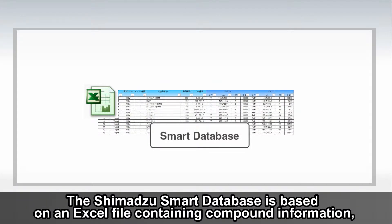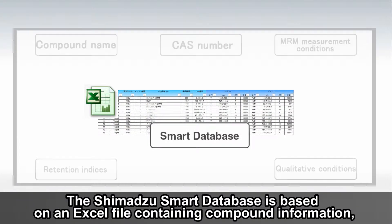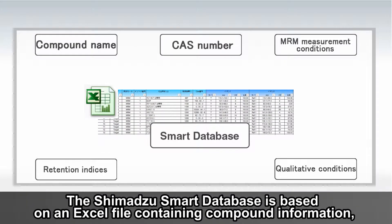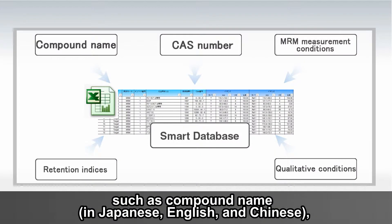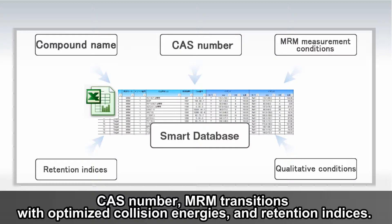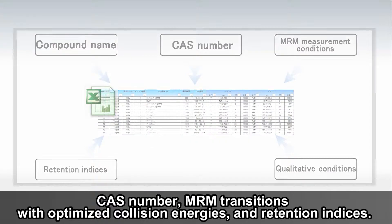The Shimadzu Smart Database is based on an Excel file containing compound information, such as compound name, CAS number, MRM transitions with optimized collision energies, and retention indices.